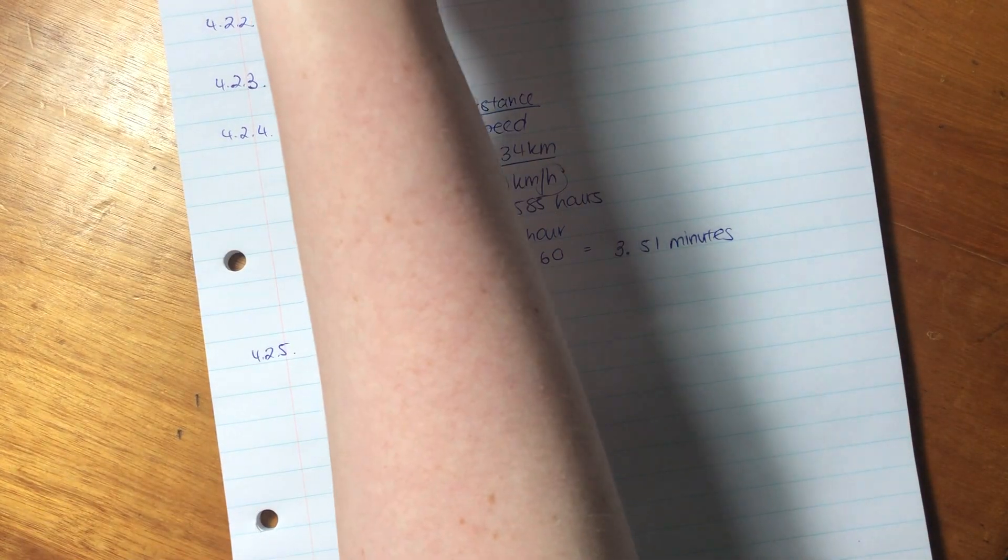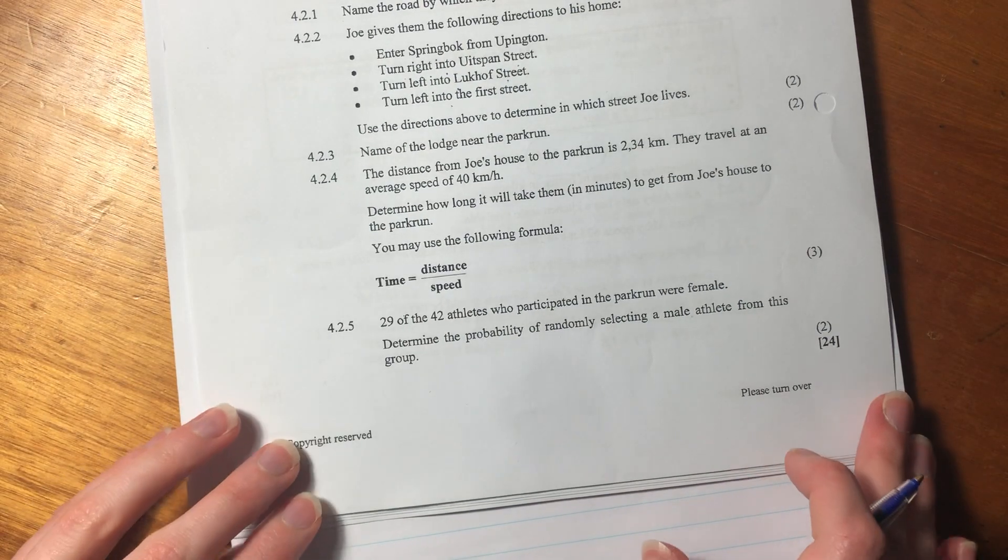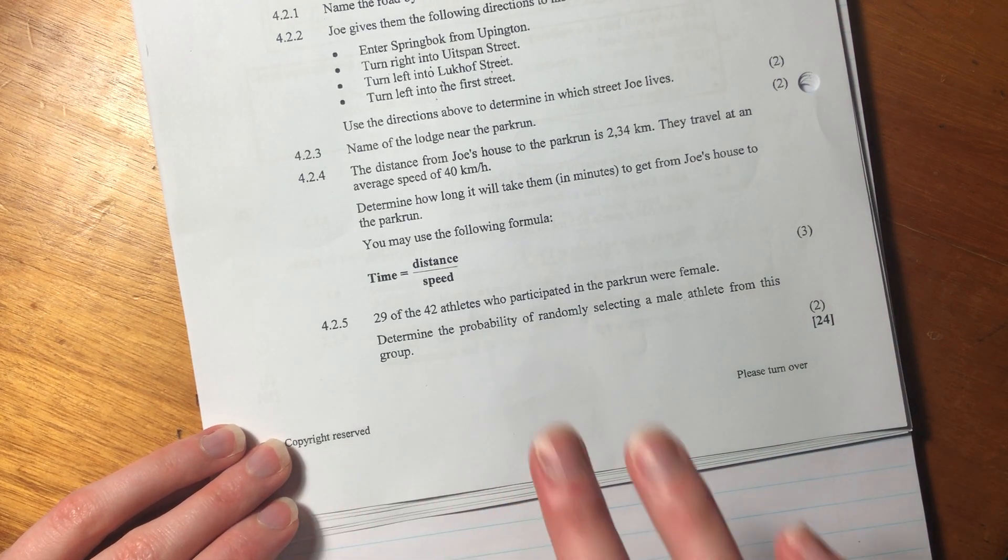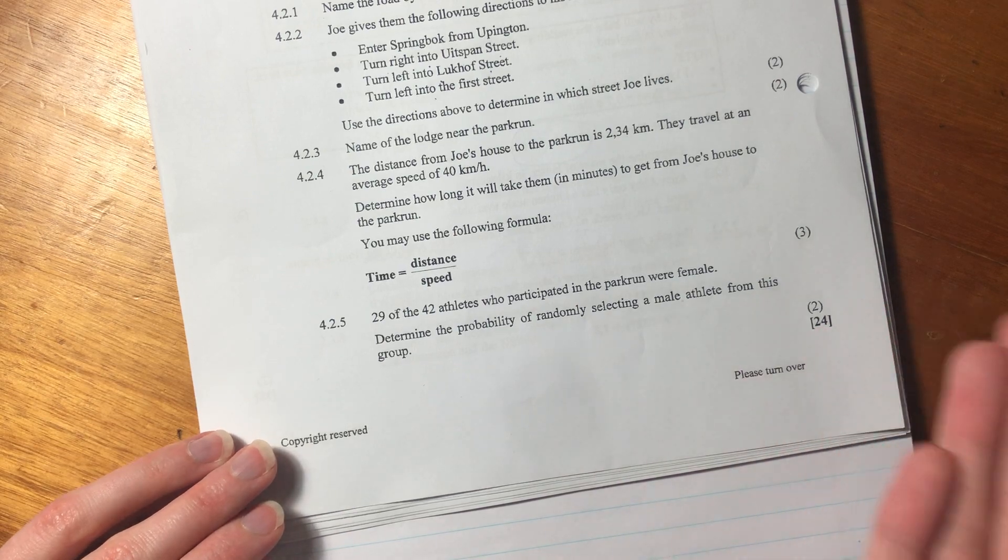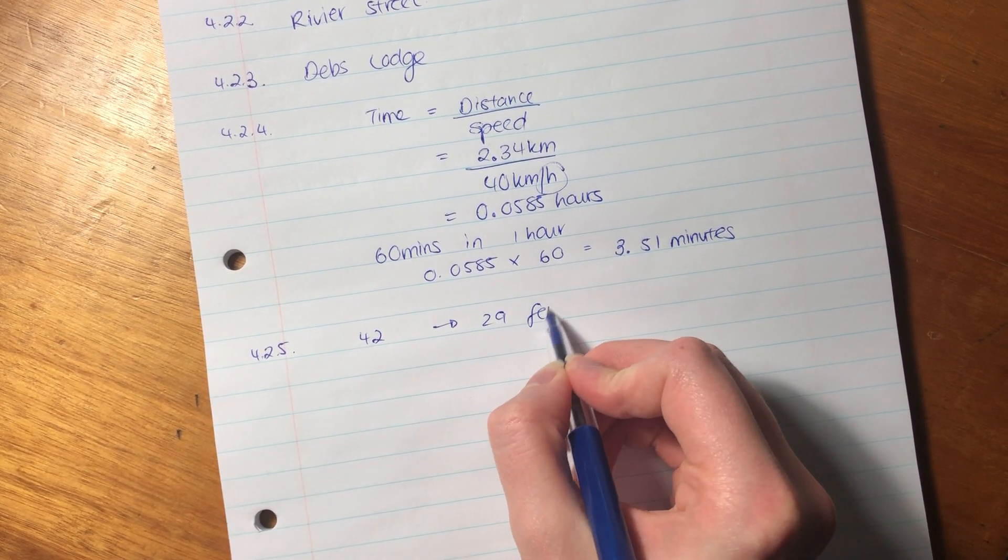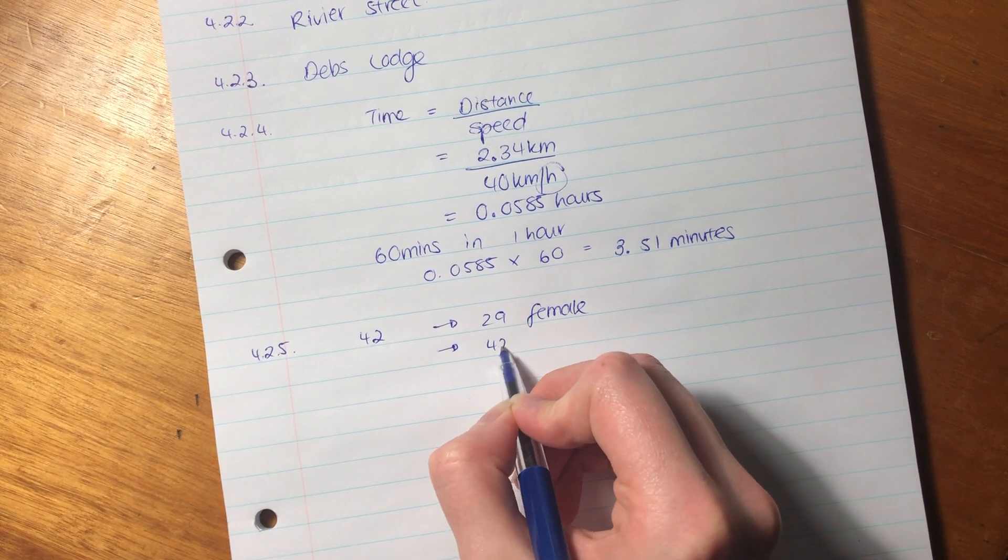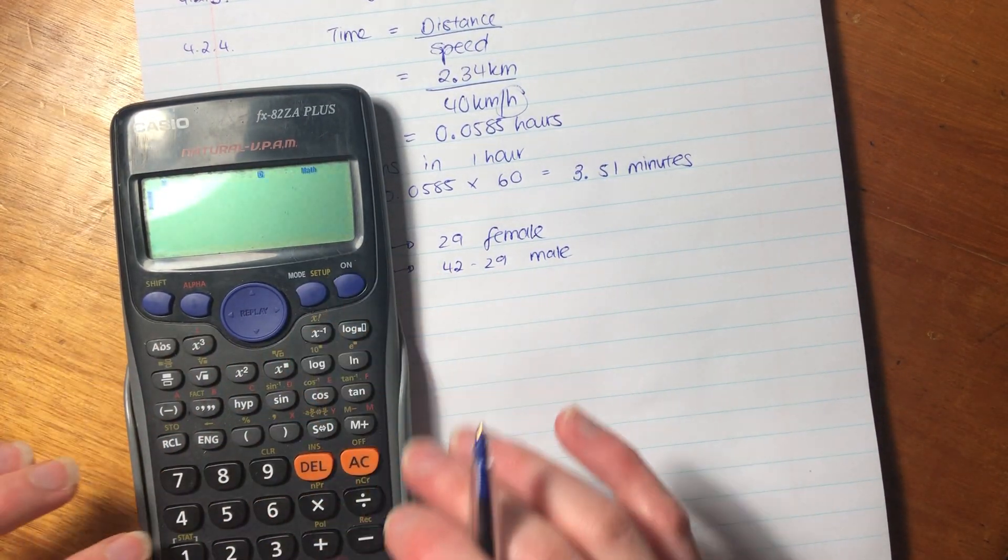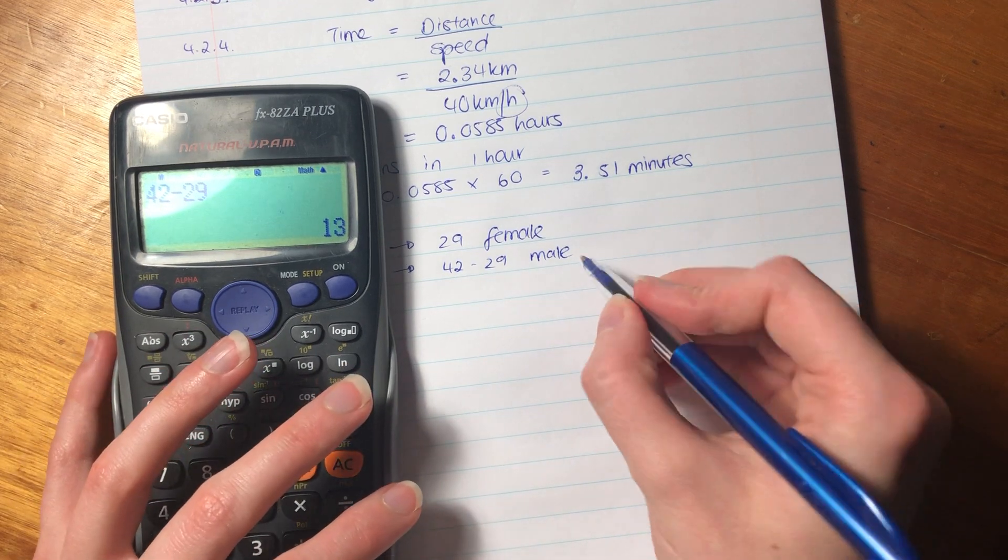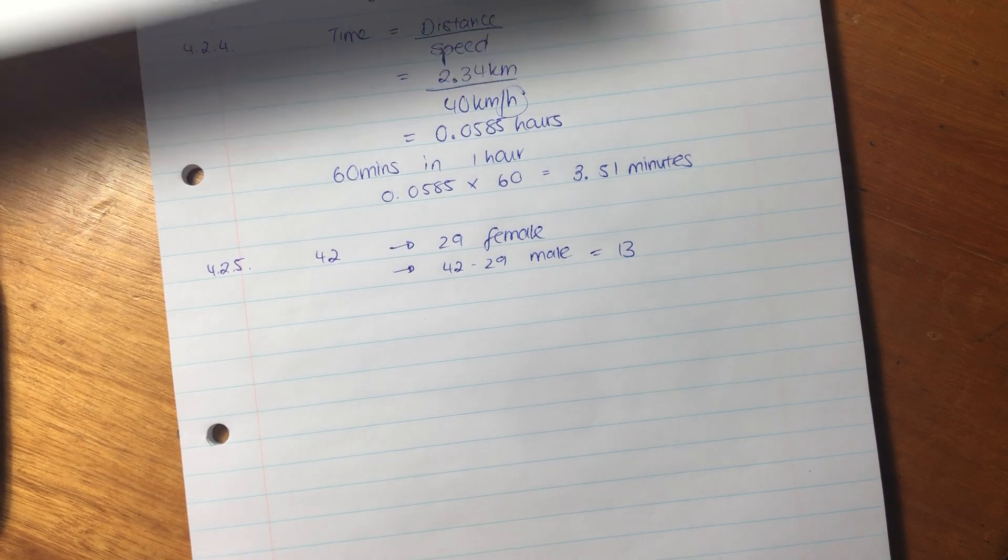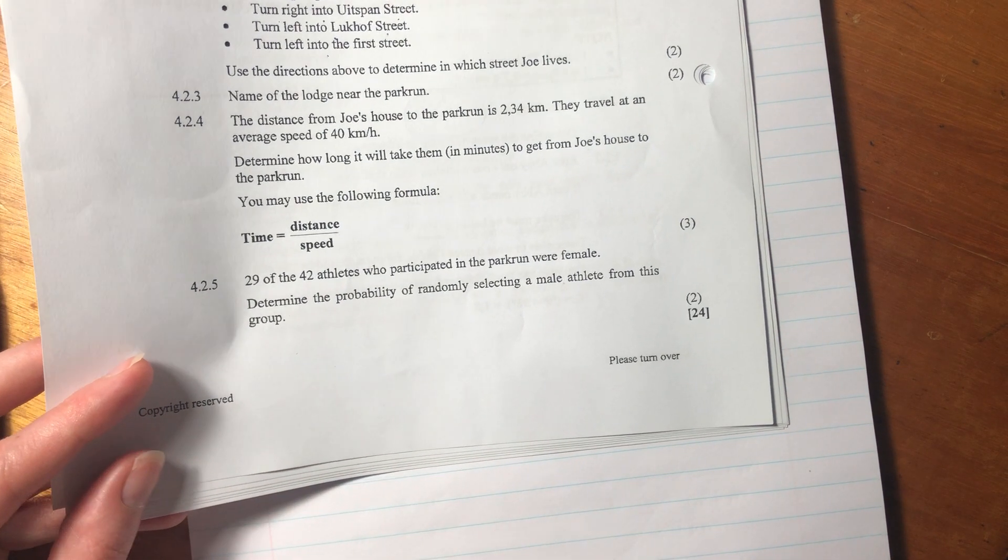Let's now go on to our last question for this question. So it says, 29 of the 42 athletes who participated in the parkrun were female. Determine the probability of randomly selecting a male athlete from the group. So if there's 42 athletes and we know that 29 are female, we know that 42 minus 29 are male, right? By definition. Because you can either be male or female. So we know that there are 13 males, 13 males, 29 females.